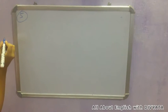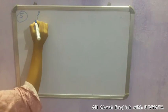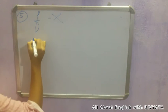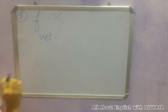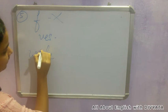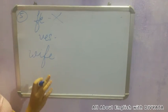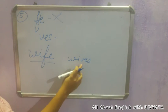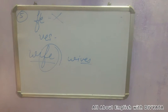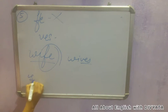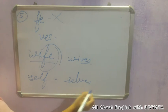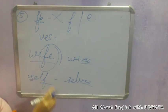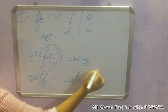The fifth rule applies to singular nouns ending in 'f' or 'fe'. We remove the 'f' or 'fe' and add 'ves'. For example, wife becomes wives — I removed 'fe' and added 'ves'. Another example: self becomes selves — I removed 'f' and added 'ves'. So whenever 'f' or 'fe' appears at the end of a singular word, we remove it and add 'ves' to make the plural.